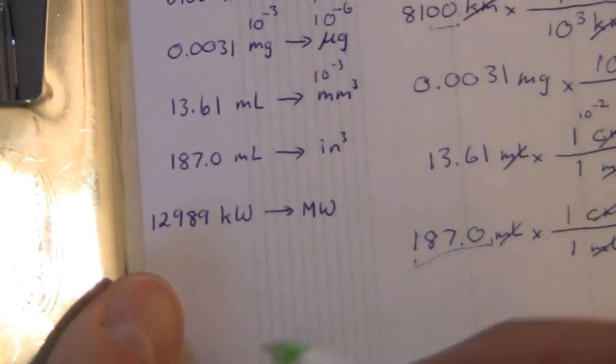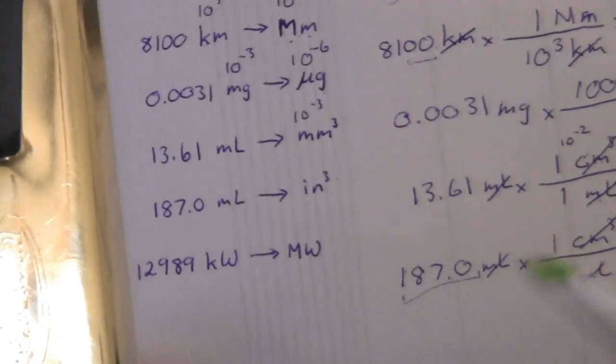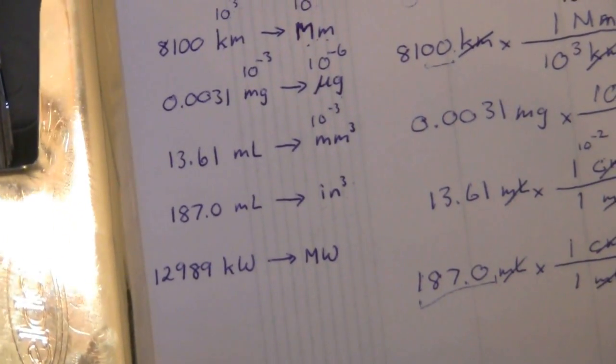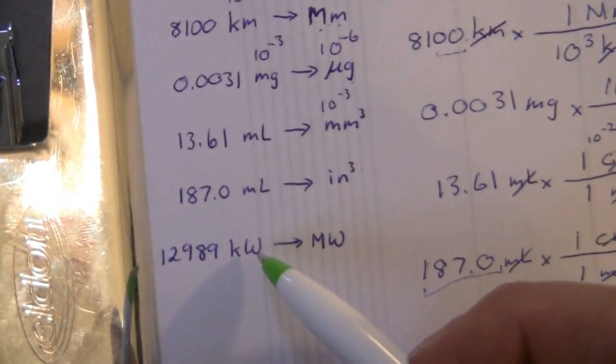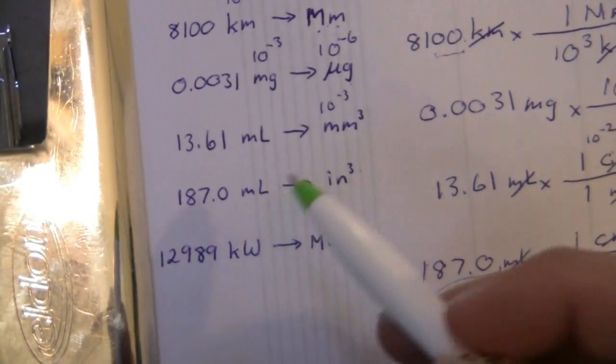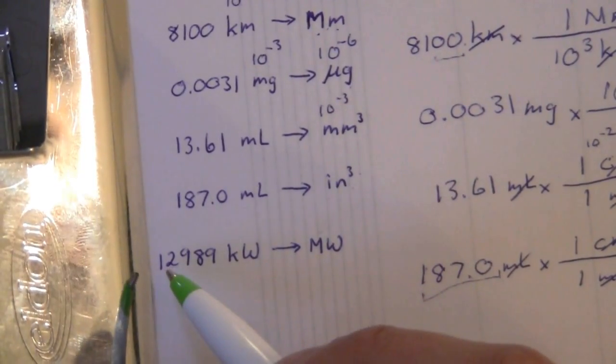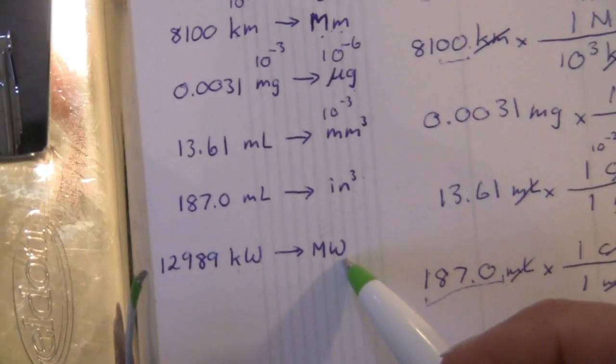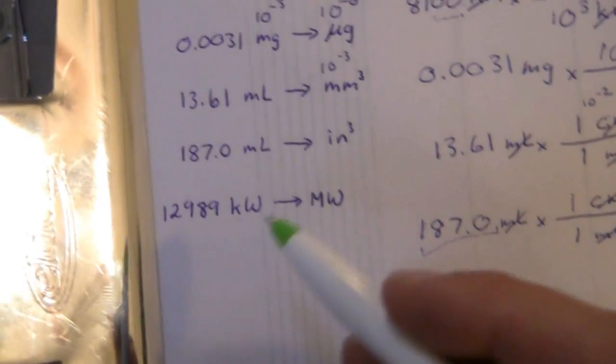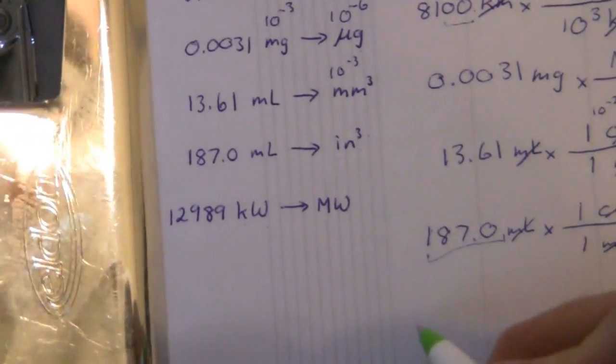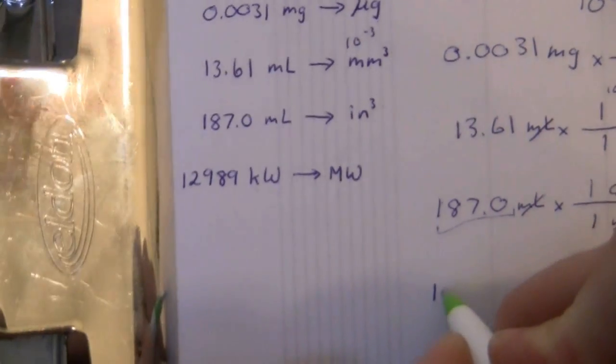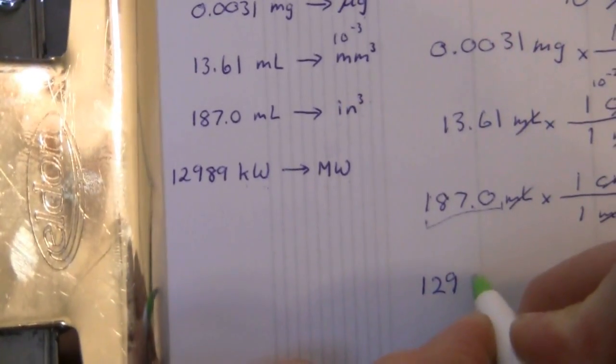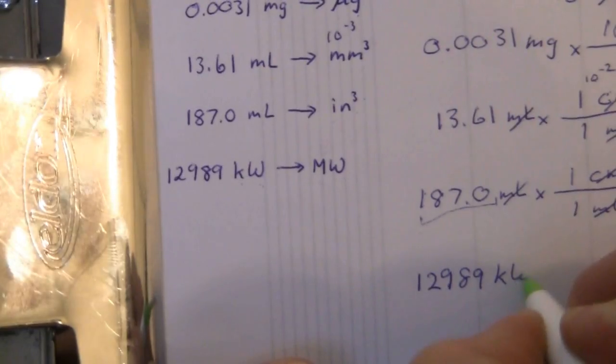One last conversion, and these are units that you haven't seen before, but I thought I'd throw them in because I'm sure you've heard about them. This is the watt, abbreviated by the W. So 12,989 kilowatts is how many megawatts? This is a measure of electrical power, and it's treated exactly the same.